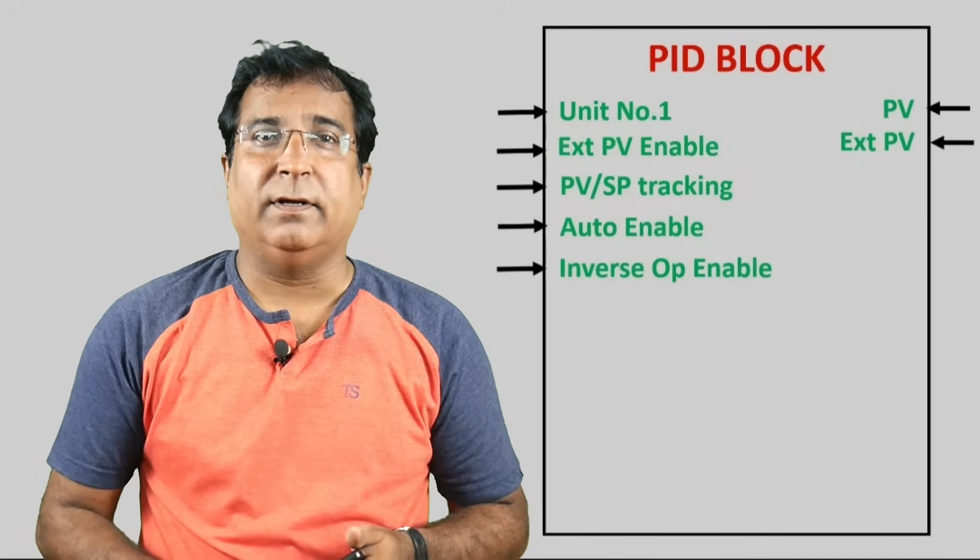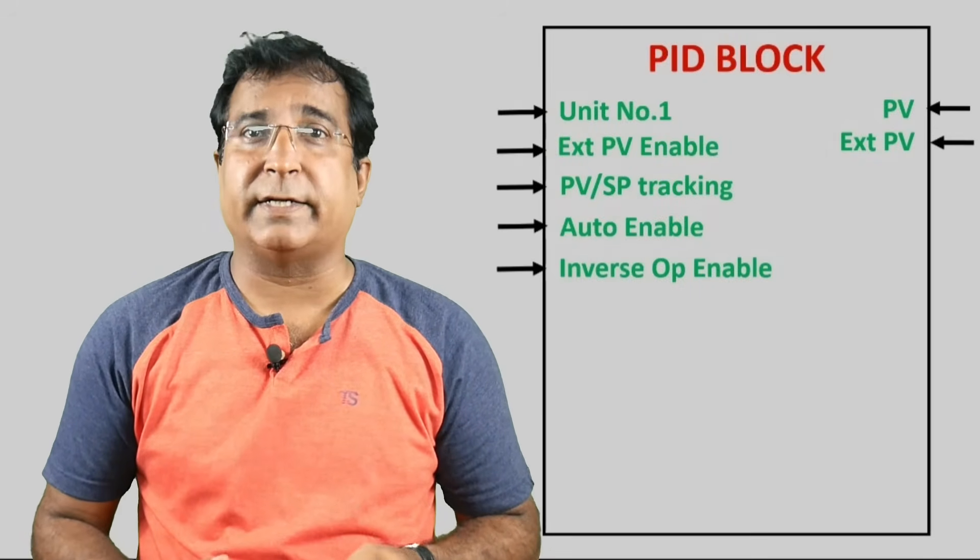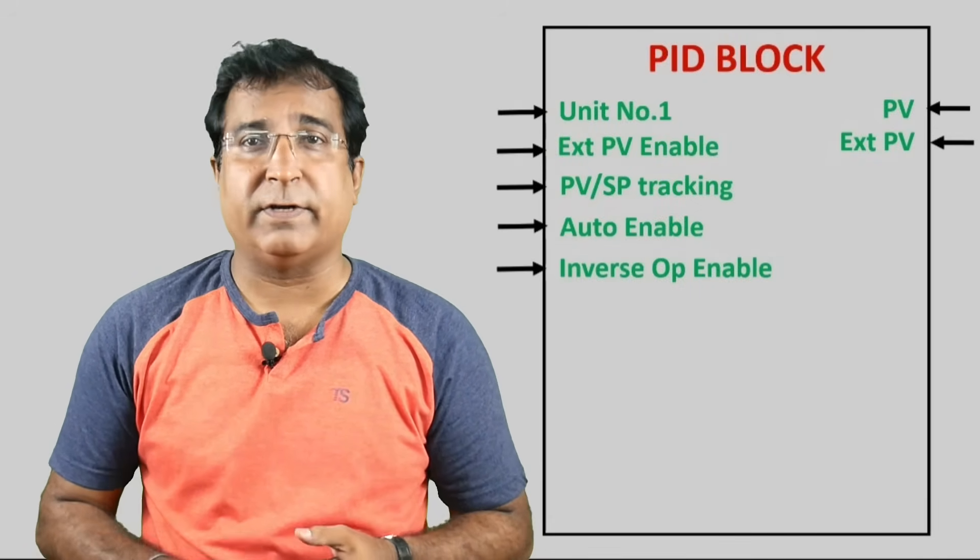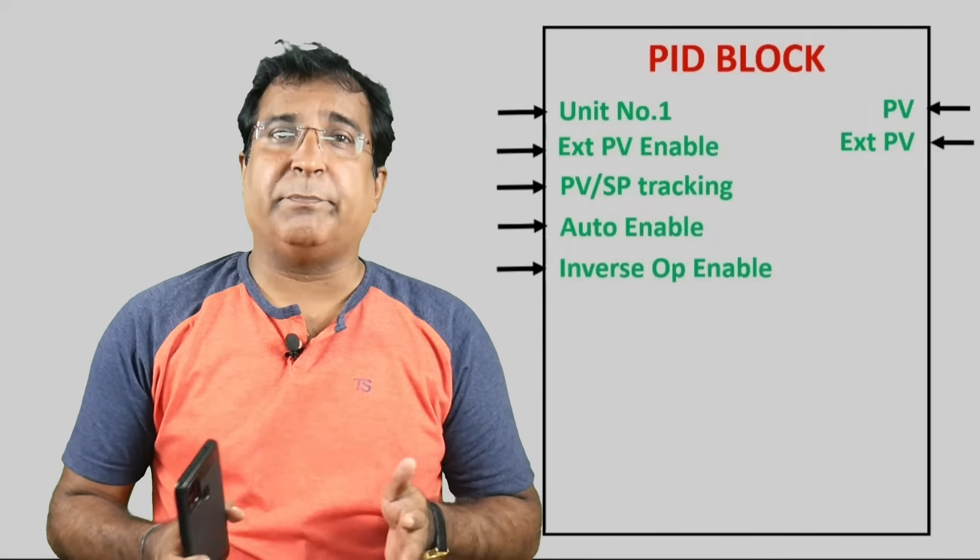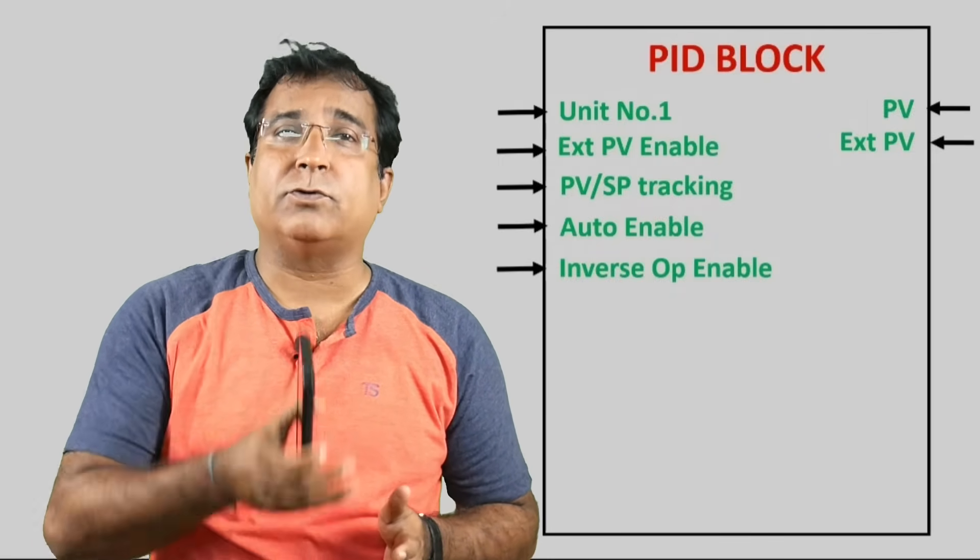Inverse operation. This bit has to be kept logical zero for direct acting controller, logical one for reverse acting controller. In reverse acting controller when process value increases, the output also increases.